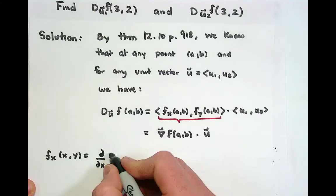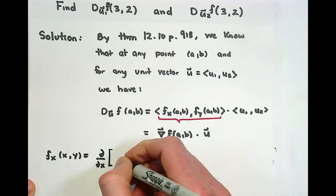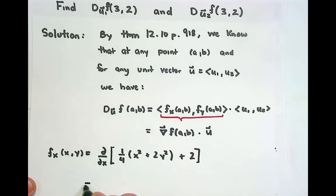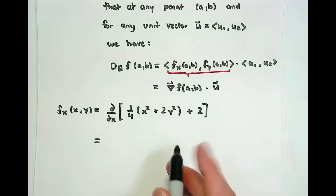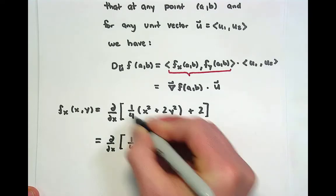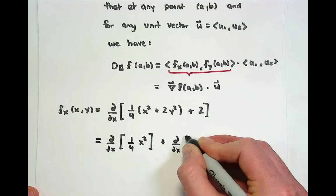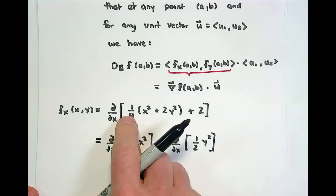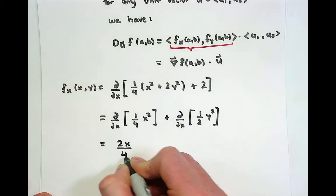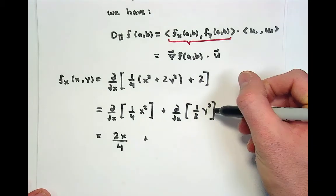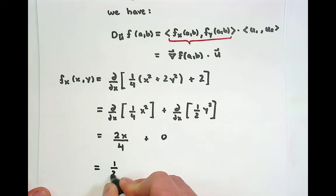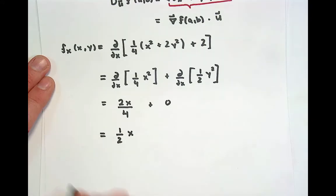First, we'll calculate the partial derivative of f with respect to x. The function f is one-fourth times (x squared plus 2y squared) plus 2. The derivative of 2 with respect to x is 0. Distributing the one-fourth, we get the partial derivative of (1/4)x squared, which gives 2x divided by 4. Since we're taking the partial derivative of y squared with respect to x, that gives 0. So the partial derivative with respect to x is (1/2)x.